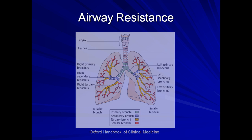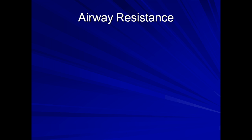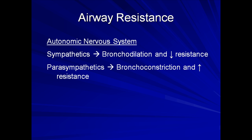Airway radius can be impacted by a number of factors, most obviously during exacerbations of asthma or COPD or during anaphylaxis, all of which can lead to acute narrowing of the airways. However, there are two general physiologic processes which can impact airway resistance in the absence of primary pulmonary disease. The more prominent of these is the effect of the autonomic nervous system. Sympathetic stimulation via beta-2 receptors relaxes bronchial smooth muscle, leading to bronchodilation and decreased resistance. Conversely, parasympathetic stimulation of muscarinic receptors leads to bronchoconstriction and increased resistance.